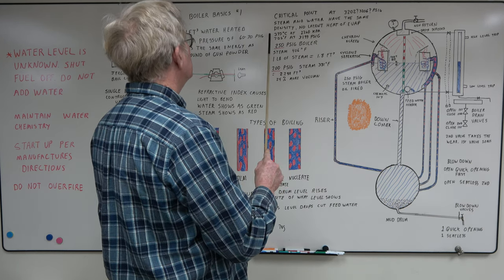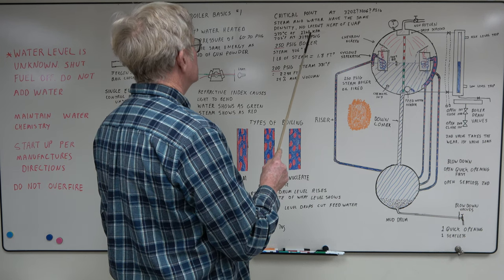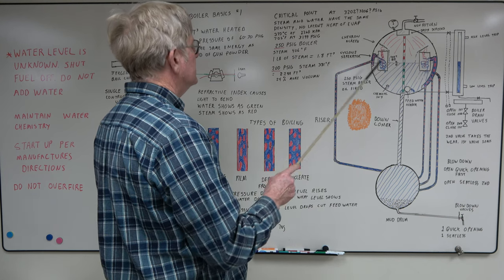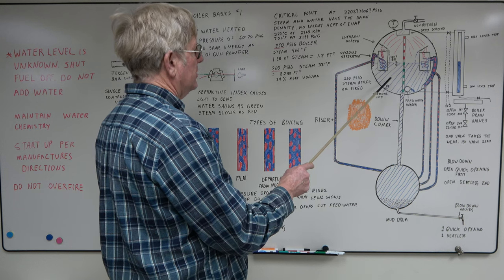In the metric, it'd be 373 degrees Celsius at 2260 kilopascals. A 250 PSI boiler, the steam is at 406 degrees and one pound of steam occupies 1.8 cubic feet.